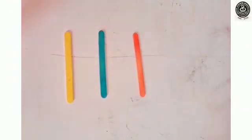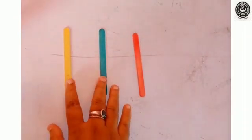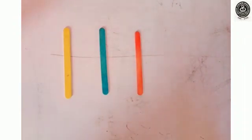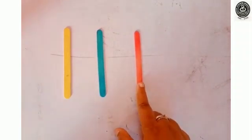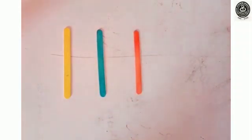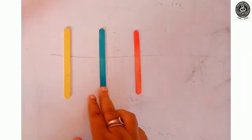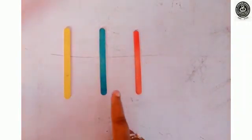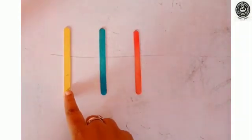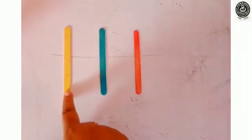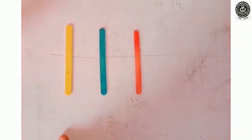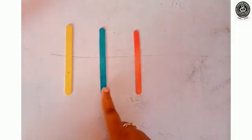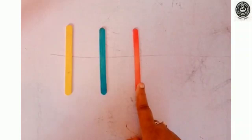Now, let's move to ice cream sticks. Three ice cream sticks are here. Color is yellow, blue, and red. Children, which color stick is before blue color? Yes, this one. Very good. This is a yellow stick. And which one is after blue color? Which stick? That is red color stick. Very good.